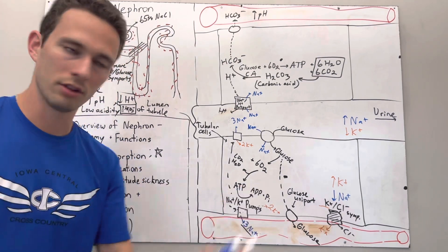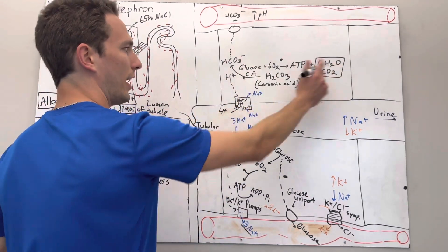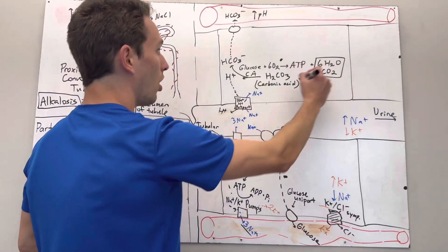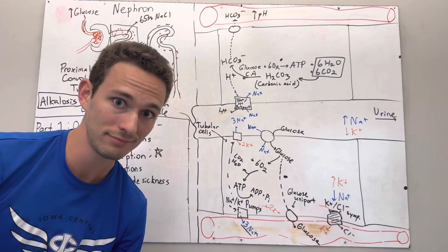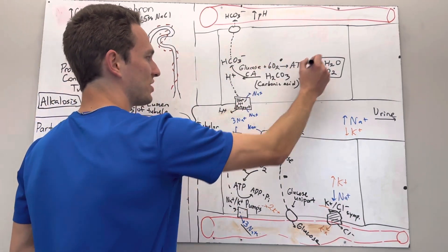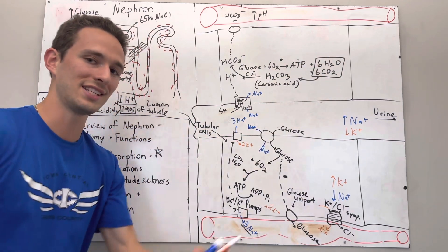So the question is, how do we stop bicarbonate from being reabsorbed into the bloodstream? You may say, well, let's just stop this reaction. Let's stop glucose and oxygen making ATP and all that stuff, because then all the stuff downstream will happen. Probably not the best idea, because if we stop this process, we have no ATP. If we have no ATP, cells die.